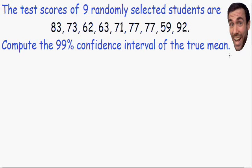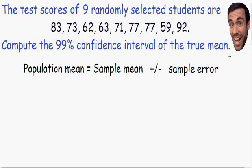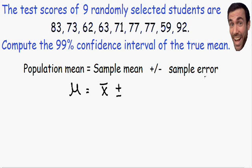The first thing I want to do is write down the confidence interval formula we're going to use. This is the same formula from my first confidence interval video — I highly recommend watching that if you haven't. The population mean equals the sample mean plus or minus a sampling error. The population mean is written with the Greek letter mu, and the sample mean is written as x-bar.